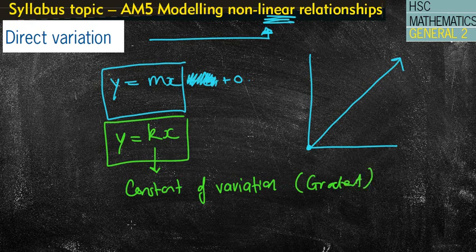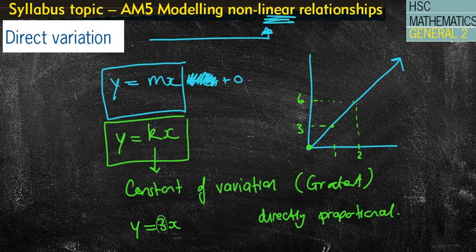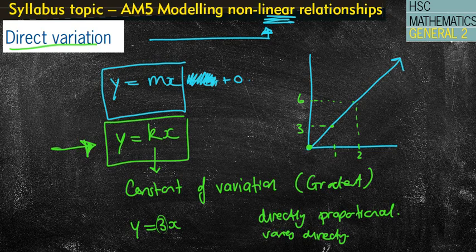For example, you might have y equals 3x. The reason it's called direct variation — or they often use the phrase 'directly proportional' — is because your x value is always being multiplied by the same number. If x is 0, then 3 times 0 is 0. When x is 1, then 3 times 1 is 3. When x is 2, y is 6. It's always multiplied by the same number, which is why it's called directly proportional or 'varies directly with.' Whenever you see those words, we're looking at the formula y equals kx, and it is not on your formula sheet, so you need to remember it.